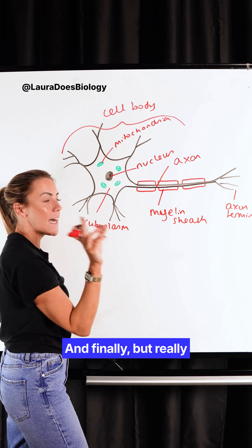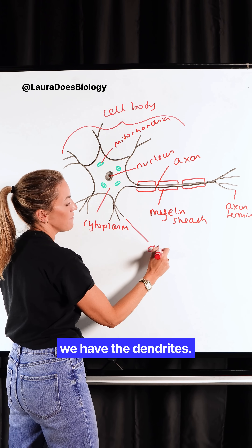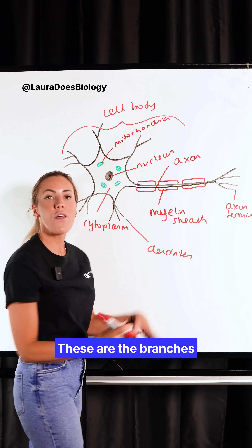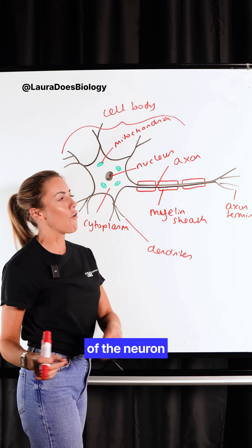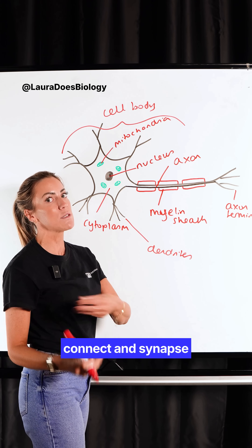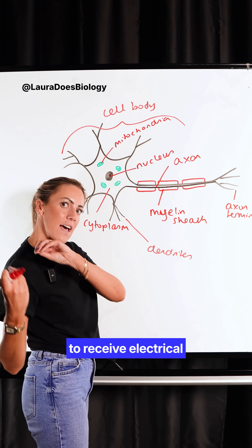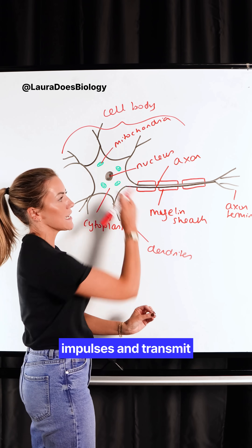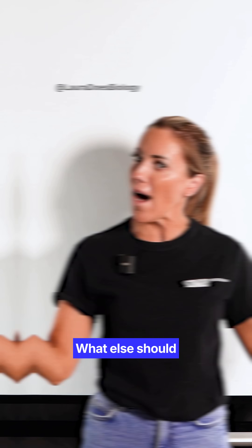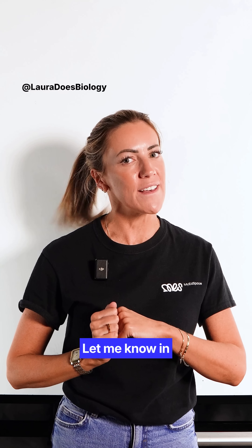And finally, but really important, we have the dendrites. These are the branches of the neuron that allow it to connect and synapse with other neurons to receive electrical impulses and transmit them on. What else should we label? Let me know in the comments.